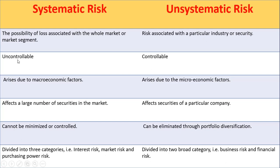Systematic risk is uncontrollable, but unsystematic risk is controllable. Systematic risk arises due to macroeconomic factors and unsystematic risk arises due to microeconomic factors. Systematic risk affects a large number of securities in the market, while unsystematic risk affects securities of a particular company.